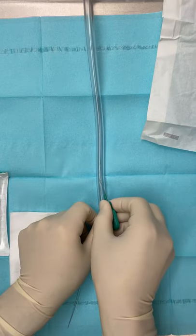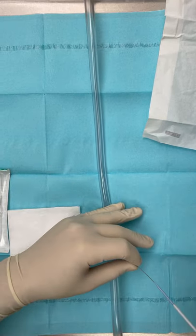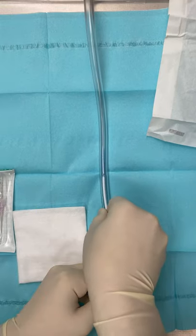Use the scalpel to increase the size of the incision. Thread on the dilator and rapid infusion catheter together. Insert both simultaneously.